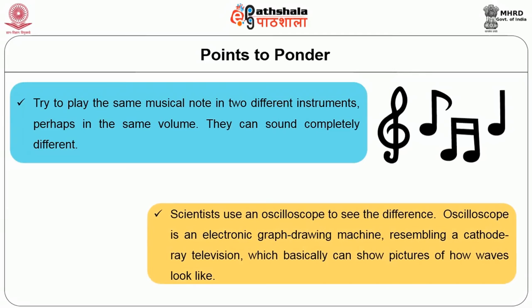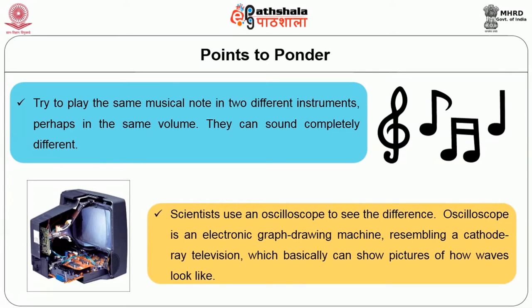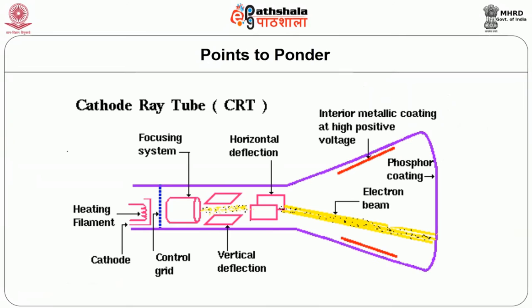Try to play the same musical note in two different instruments at the same volume — they can sound completely different. How can that be if they are producing the same sound waves? It is quite obvious they are not producing the same sound waves. Scientists use an oscilloscope to see the difference. An oscilloscope is an electronic graph-drawing machine resembling a cathode ray television which can show pictures of how waves look. Yes, they are different in their wave shapes.